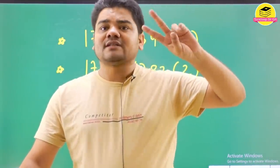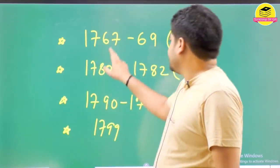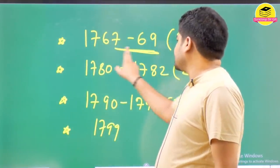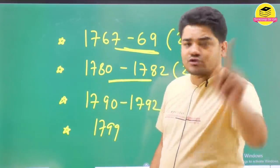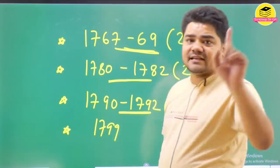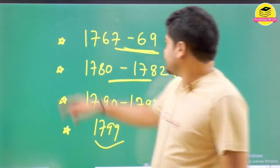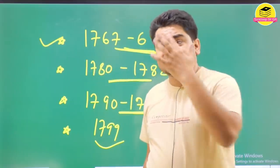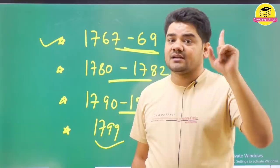These four wars, each lasted about two years. The first was from 1767 to 69, two years. The second was 1780 to 82, two years. Third was 1790 to 92, two years. And the 1799 one finished in just one year. So remember when each war happened - from this video at least 25 to 30 questions can be made, so memorize everything.